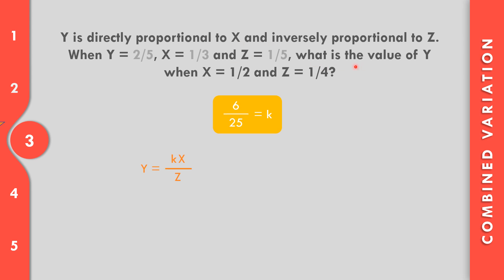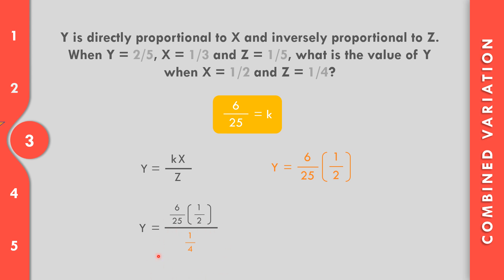Find y when x equals 1/2 and z equals 1/4, with k equals 6/25. Substituting: y equals (6/25) times (1/2) over (1/4). Dividing by 1/4 means multiplying by 4/1. Simplifying, 4 divided by 2 equals 2. Then 6 times 1 times 2 equals 12, and 25 times 1 equals 25. So the value of y equals 12 over 25.